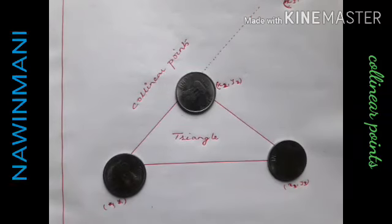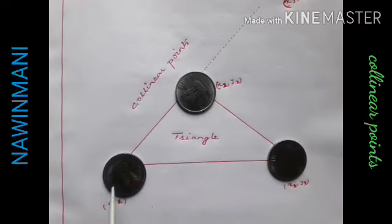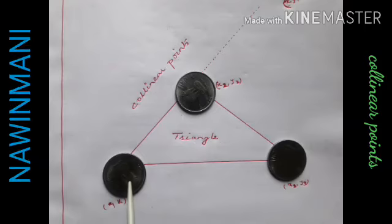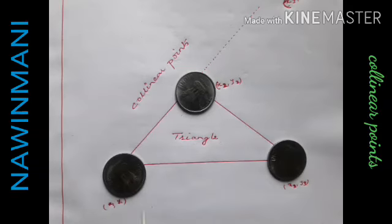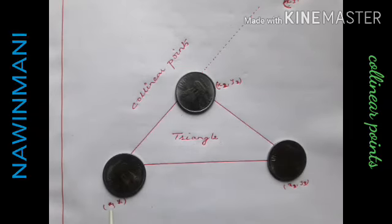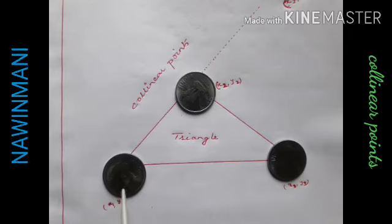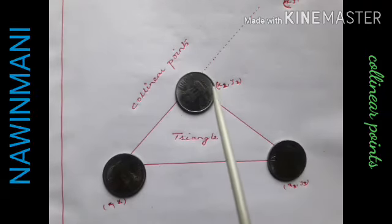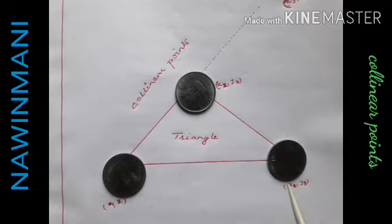Now children, you can see there are three coins. I have taken these coins as the points. This one is having coordinates x1, y1. This is having coordinate x2, y2. This is having coordinate x3, y3.